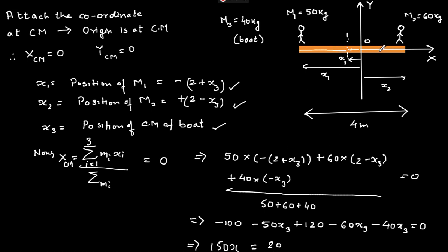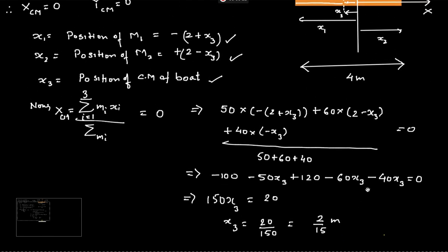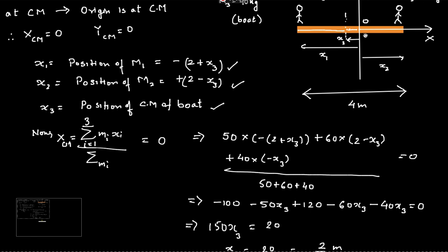Expanding the numerator: 50 × (−2 − x3) + 60 × (2 − x3) + 40 × (−x3), where M1 and M3 are on the negative x side of the center of mass. This is divided by total mass 50 + 60 + 40, and set equal to 0 — because the coordinate system is at the center of mass. Solving this gives x3 = 2/15 meters. So the boat's center of mass is 2/15 meters away from the system center of mass when the people are at the two extremes.